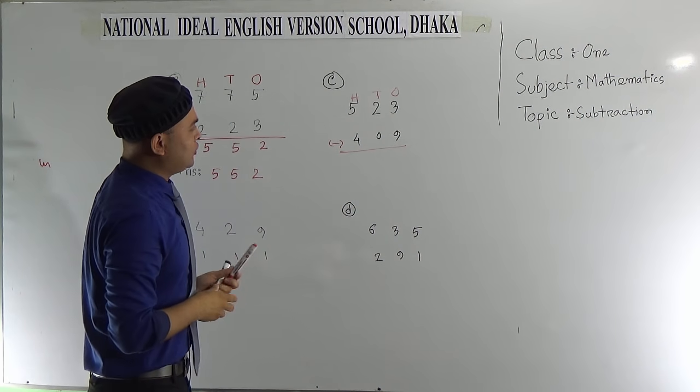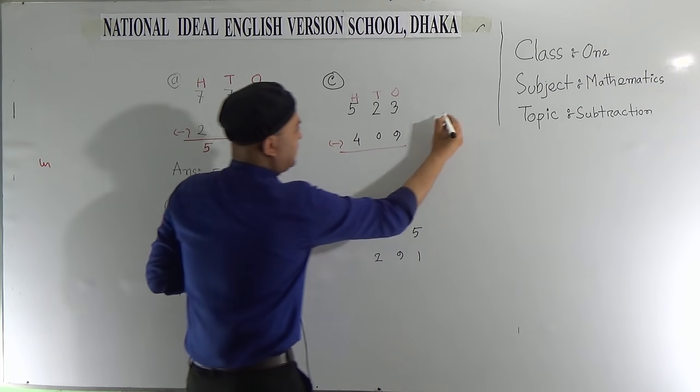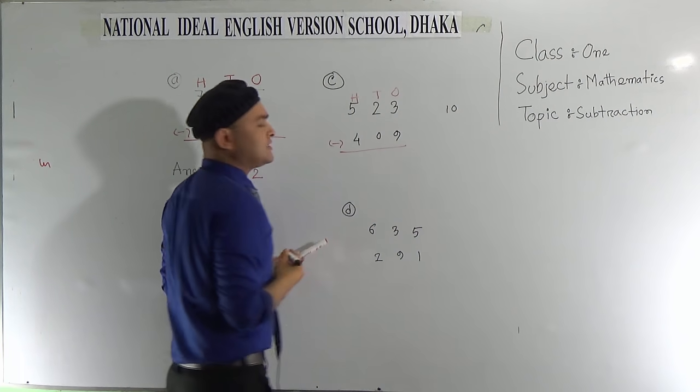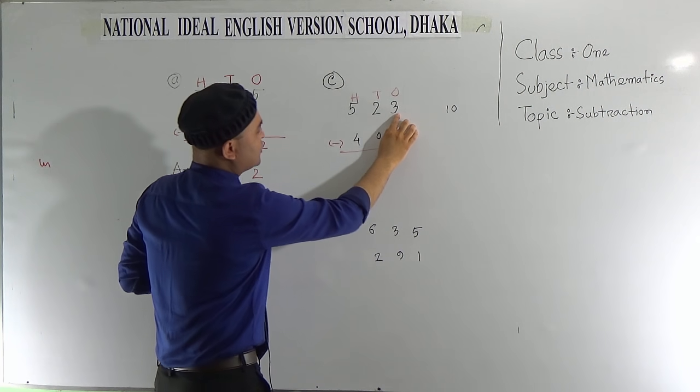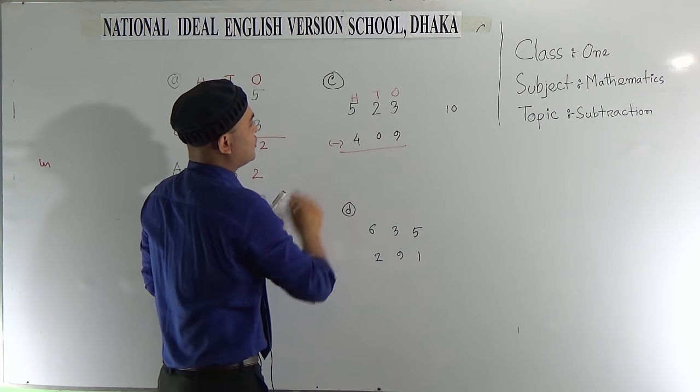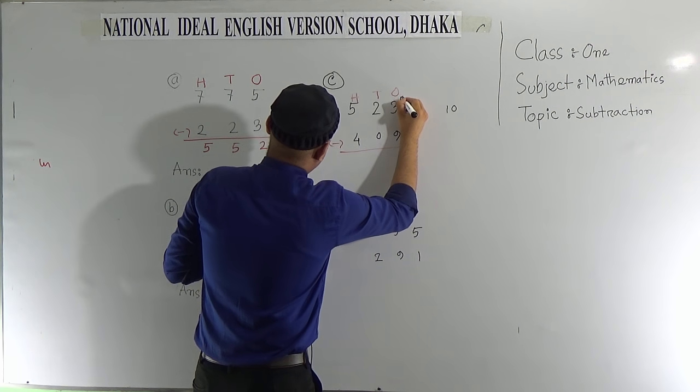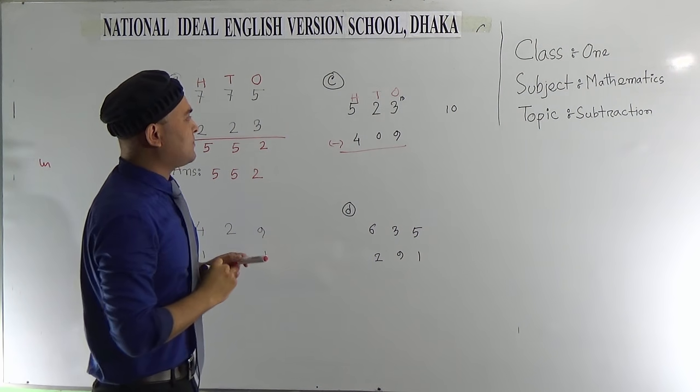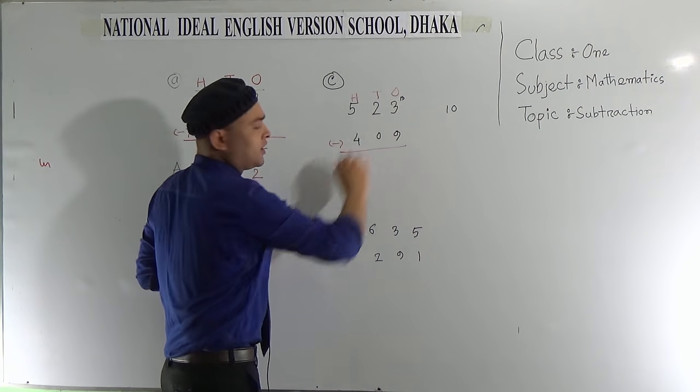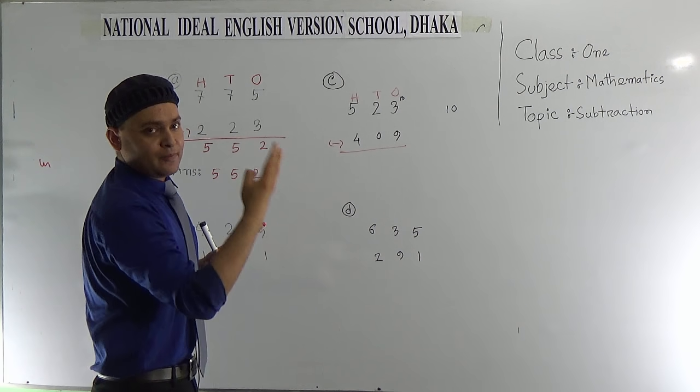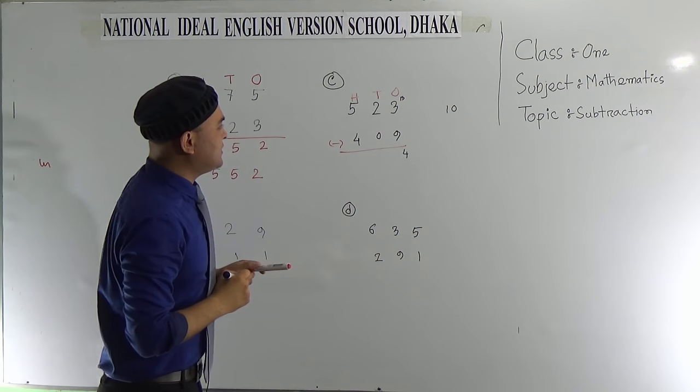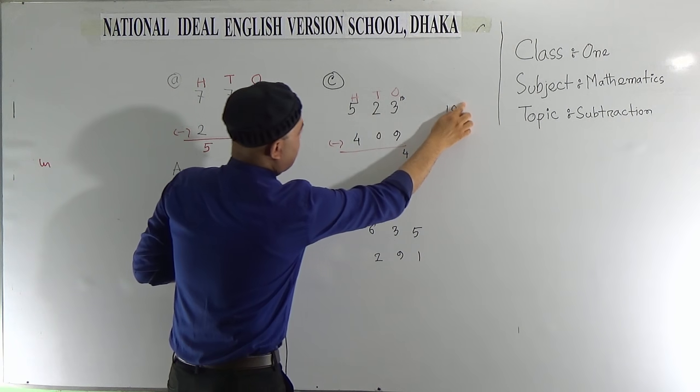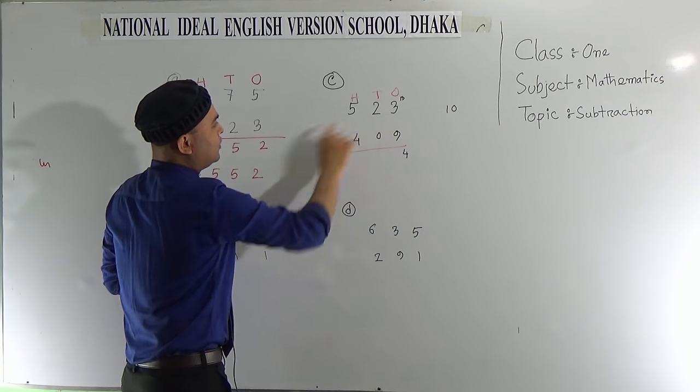We know that 10's means 10 ones. 10's means 10 ones, and 10 ones and 3 ones is 13. So 3 will be as like as 13. Now subtract 9 from 13. 10, 11, 12, 13. That will be 4.